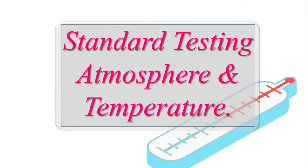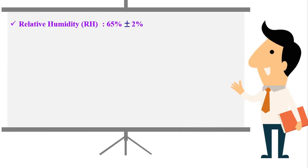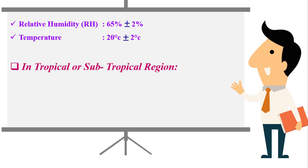Standard Testing Atmosphere and Temperature. The standard atmosphere requires a relative humidity of 65%. The temperature should be 20 degrees Celsius. In some standards, the temperature should be 27 degrees Celsius, plus or minus 2 degrees Celsius.